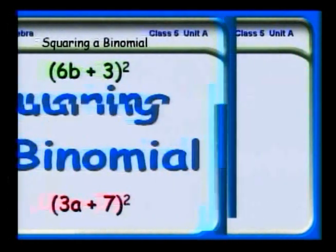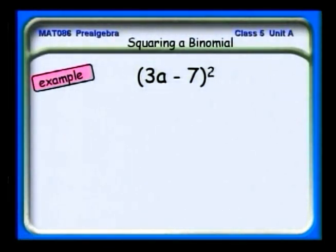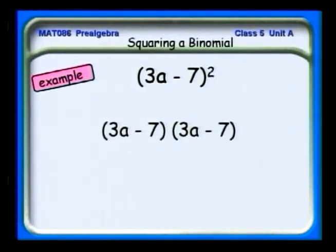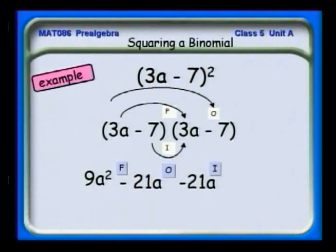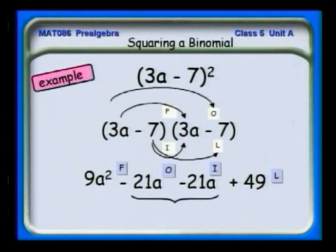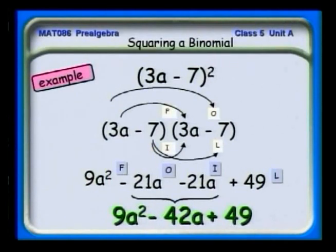The best way to talk about it is to look at a particular example. Let's square (3a − 7) using the FOIL method: (3a − 7)(3a − 7). The first terms give 9a squared. The outer term gives −21a. The inner term also gives −21a. And the last terms: (−7)(−7) = +49. Combining like terms gives the final result: 9a squared minus 42a plus 49.